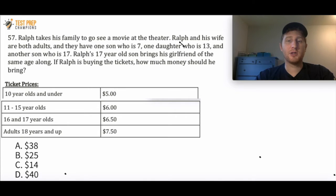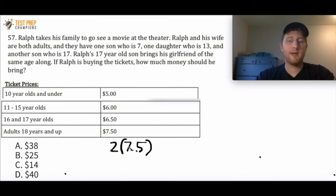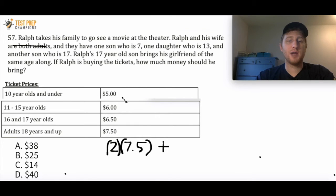Let's do 2 times 7.5, because for one adult it's going to be $7.50 and we've got 2. Now they have one son who is 7, and the son that is 7 is going to cost $5 based off the chart. So I want to do plus 5. They have one daughter who is 13, so 11 to 15 year olds it's $6. Since she is 13, I want to add 6.